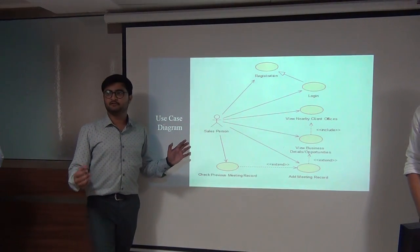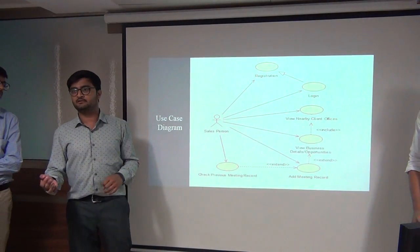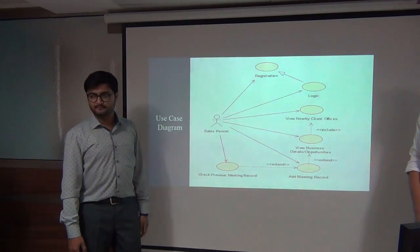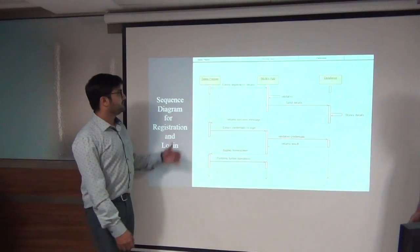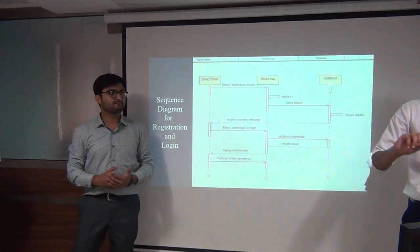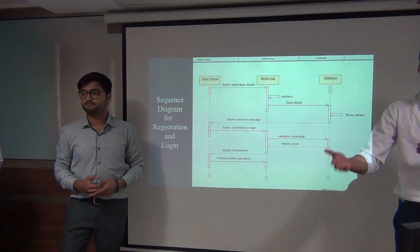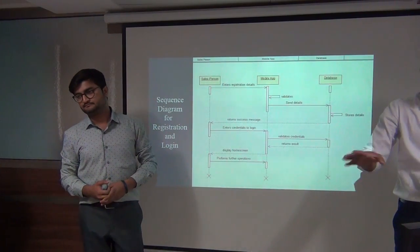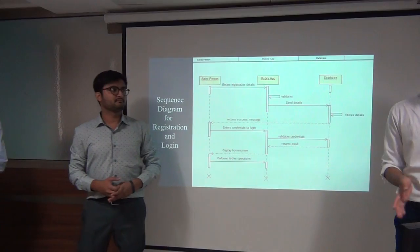This is the use case diagram. The use case given in our SRS was only view record and add record. But we have implemented some other functionalities: map directions, which were not in our SRS, and a filter option giving the salesperson the ability to change the search radius. By default it is 5 kilometers, but you can increase it up to 10 kilometers depending on the salesman.